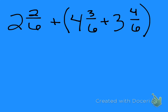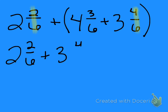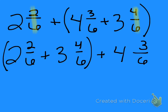One more example: 2 and 2/6 plus 4 and 3/6 plus 3 and 4/6. I'm looking for something that's going to be equivalent to 6/6. I see that 2/6 plus 4/6 will get me 6/6. So I'm going to change the order: 2 and 2/6 plus 3 and 4/6, put my parentheses around what I want to do first. I know that 4/6 plus 2/6 gets me a whole. 1 whole plus 2 is 3, and 3 plus 3 is 6.